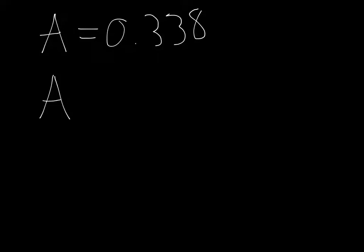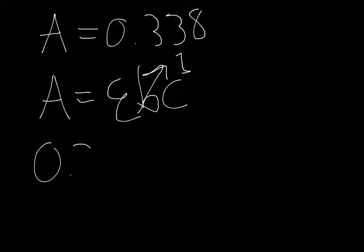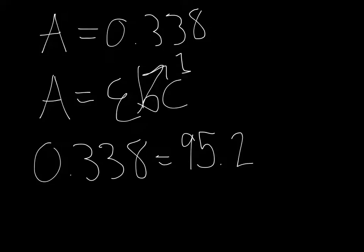Beer's Law: A equals epsilon B times the concentration, and our B is going to be 1 since we have a simple 1 centimeter cell. So that calculation runs 0.338 equals the given molar absorptivity which is 95.2 times 1 times C.